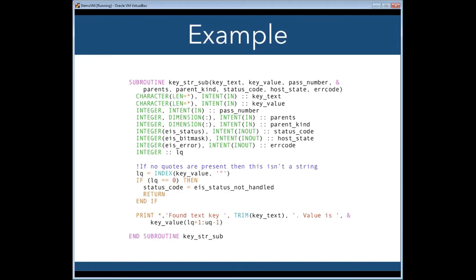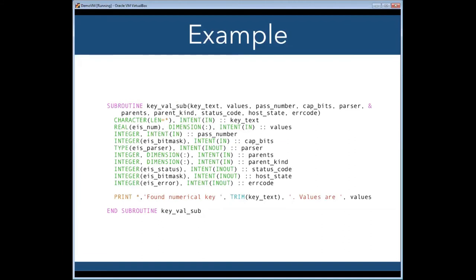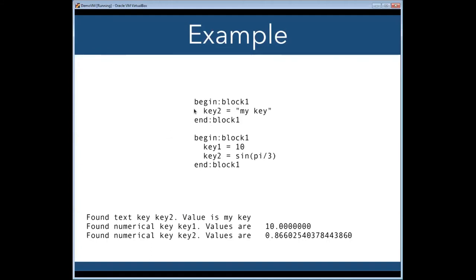So here is the key str-sub. So I check for other double quotes in the string. So this hands me the key and the value as strings. If there isn't a double quote, I return the status, status not handled, which means this action function didn't handle the key. Otherwise, I print, I found the text value. I've trimmed out a bit of the thing. That UQ is the position of the outer, the upper quote. I trim that code out to make it clearer on the slide. This is the one for the numerical one. Where now you get the key text as a string and the values as an array of numbers. Again, real numbers given here. Return from one of those parsers. And so if you run this over a deck, this is what you get. You have a begin a block, a key with double quotes. You end the block. Here you have a key with a number and a key with an expression. And they do about what you'd expect.